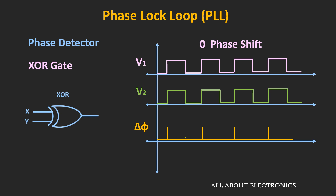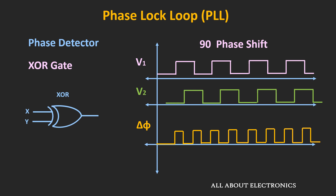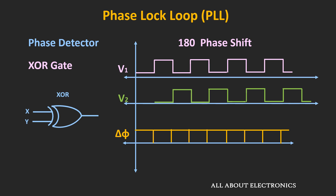If we take the average of the phase difference signal, it will be approximately equal to zero. When the phase difference is 90 degrees, the output waveform is such that its average is half of the peak value. When the phase difference is 180 degrees, the output will be maximum — ideally high all the time, with some spikes at transitions. So as the phase difference between the two signals increases, the average value of the output waveform also increases.